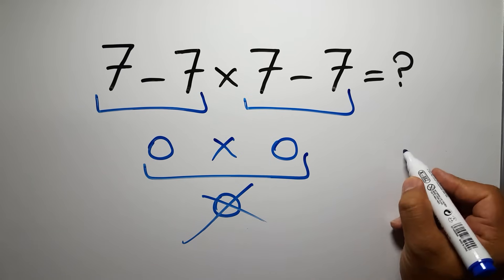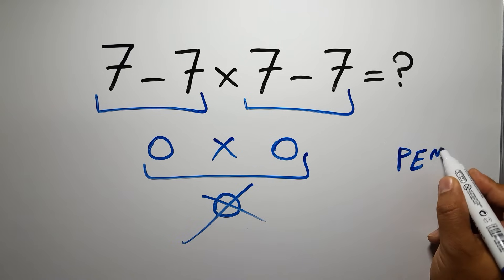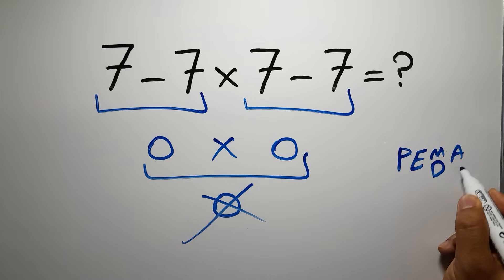Because according to the order of operations, first we have to do parentheses, then exponents, then multiplication or division, and finally addition or subtraction.